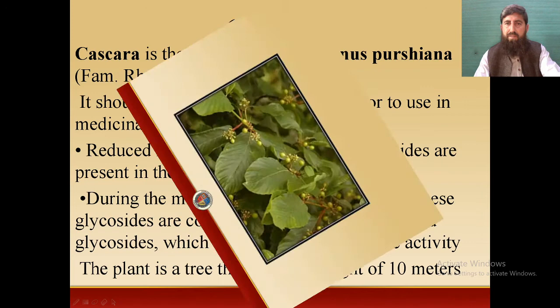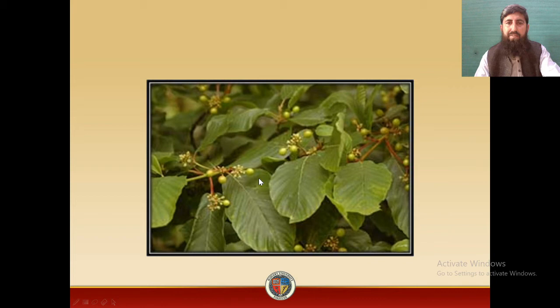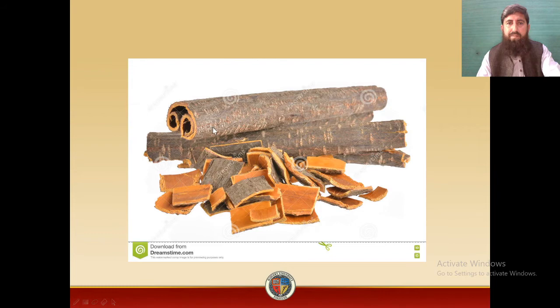The plant is a tree that attains a height of 10 meters. This is the picture of the Cascara plant showing leaves and fruits. Memorize these identification structures — they will help you identify whether the plant is Cascara or any other plant. This is the Cascara bark.